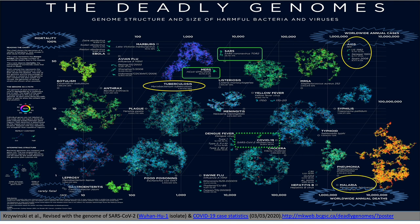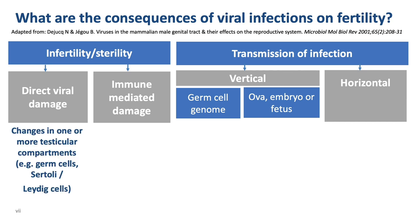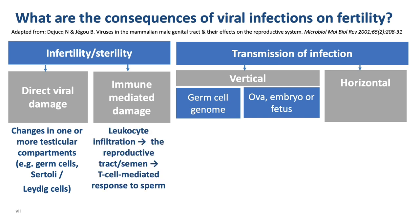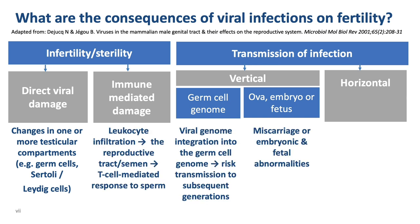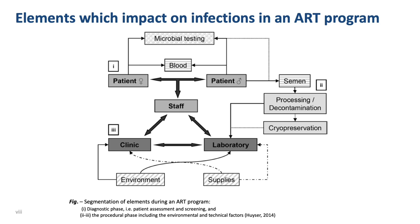What are the consequences of viral infections on fertility? Viral particles can be transmitted by a range of routes and can cause direct viral damage or immune-mediated damage. Vertical transmission can result in genome integration or embryonic abnormalities, whereas horizontal transmission can occur between partners or patients, health workers and ART samples. This slide will be used as the backbone of this presentation to illustrate the procedures implemented when dealing with possible infections, including blood-borne viruses and reinforcement of preventative measures for possible airborne transmissions.